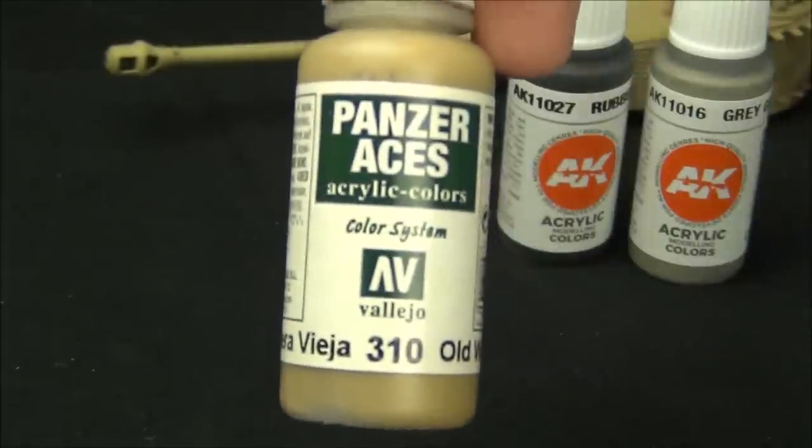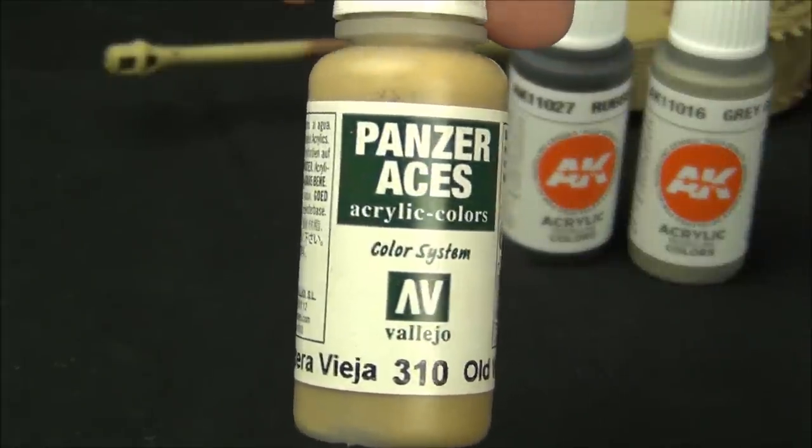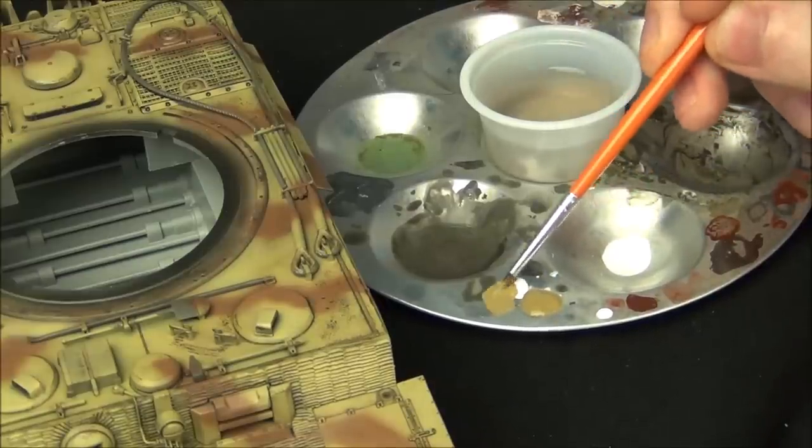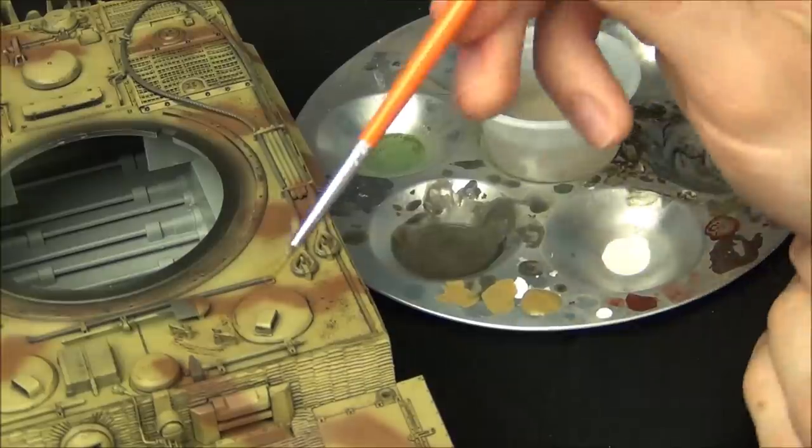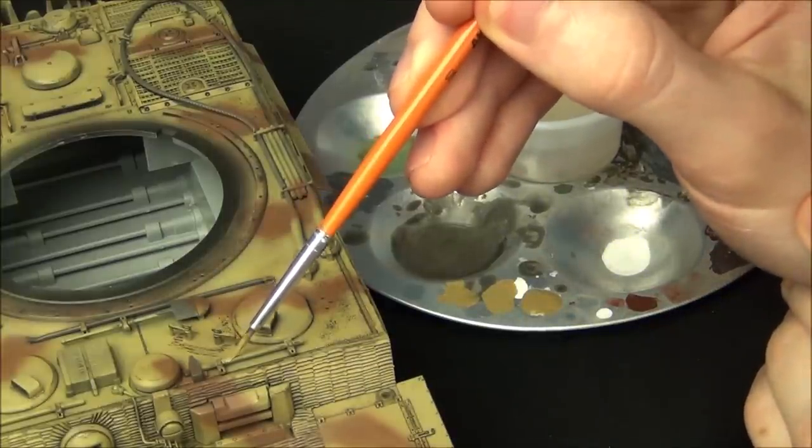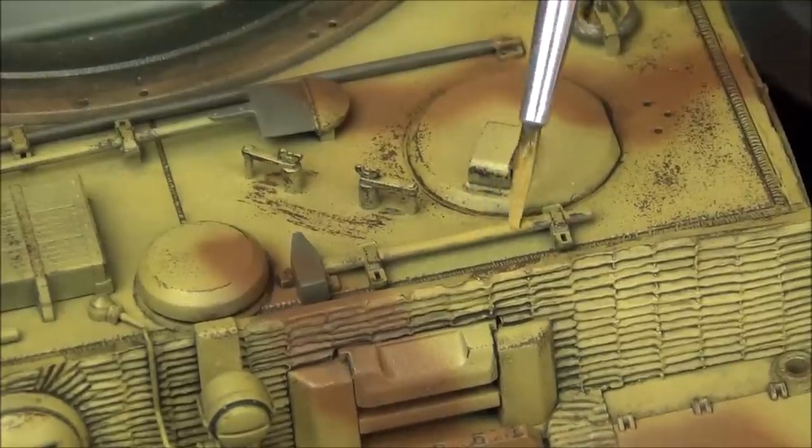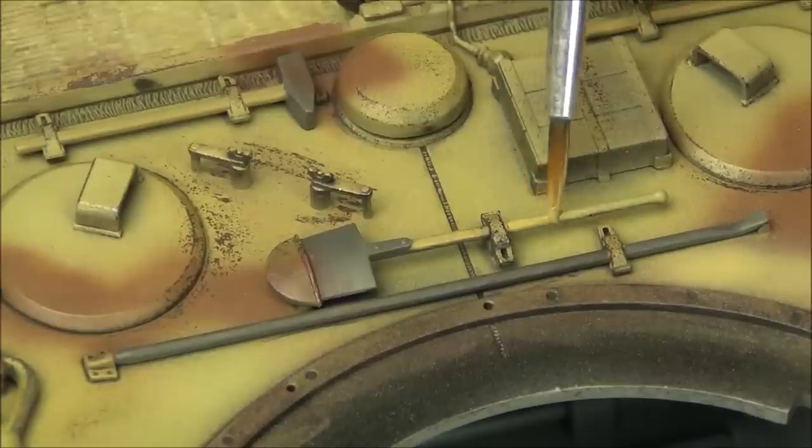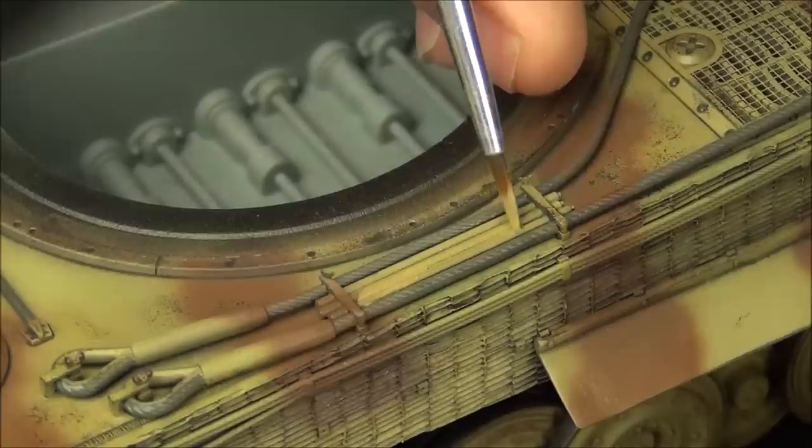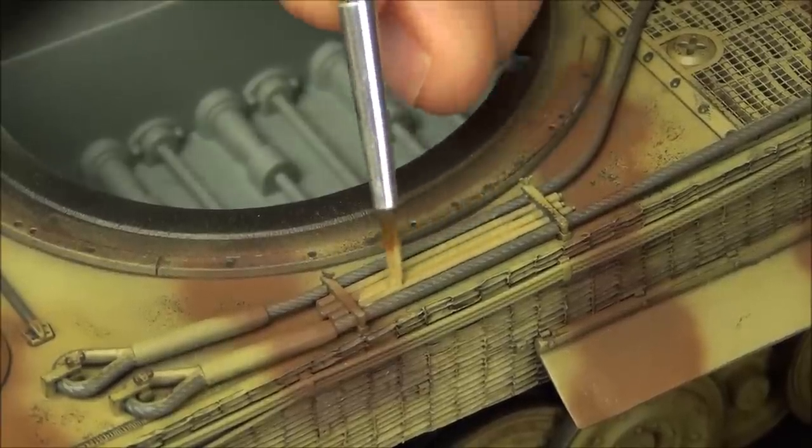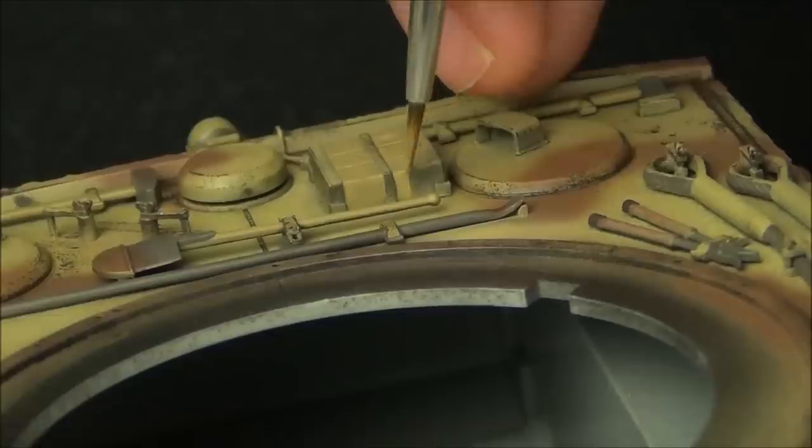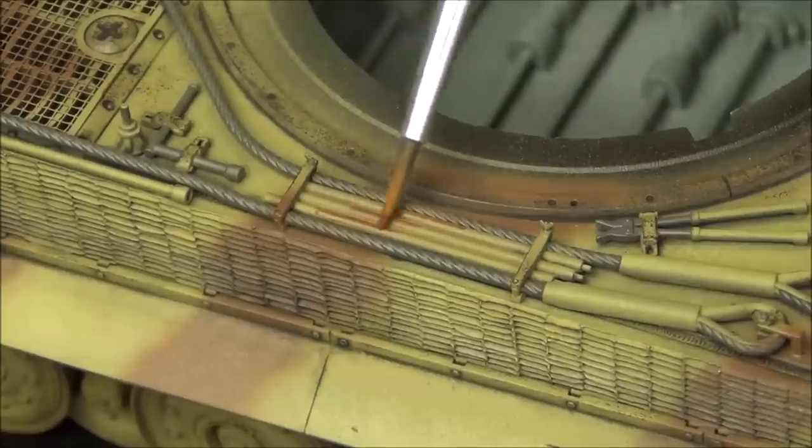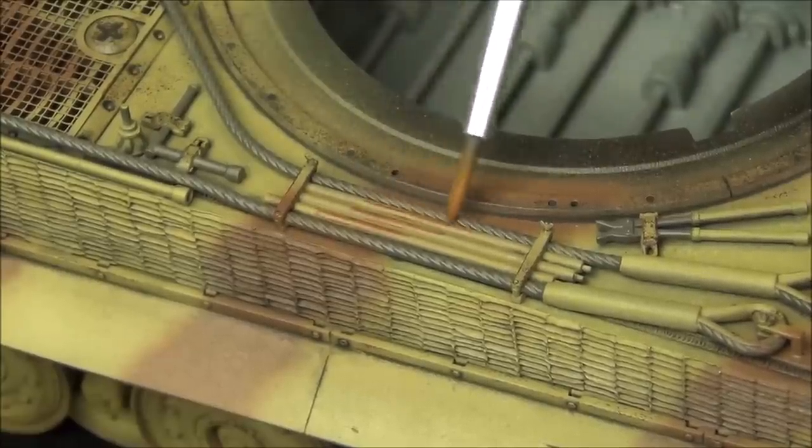The next color we will use is Panzer Aces 310 old wood. No prizes for guessing where this will be used. Again I'm thinning it with a little bit of water because these paints like the AK ones before are a little bit thick in the bottle. So I'm thinning it about 50% I'd say and I use it to paint all the wooden areas of the tools. So that's the handle of the sledgehammer, also the handle of the axe, the handle of the shovel, the barrel cleaning rods are also wooden, and also the jack block. Do not forget the sides of it. I always used to forget the sides of the jack block but they're also part of the wooden piece. Again I'm repainting the red camouflage over top of the wooden areas of the tools.